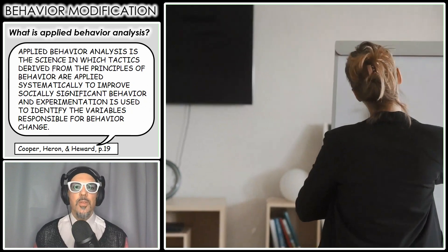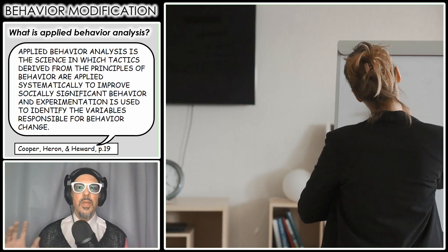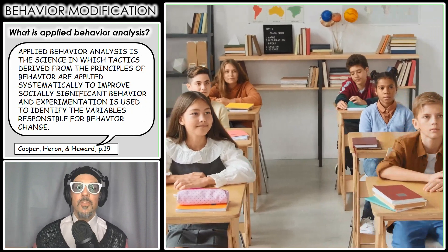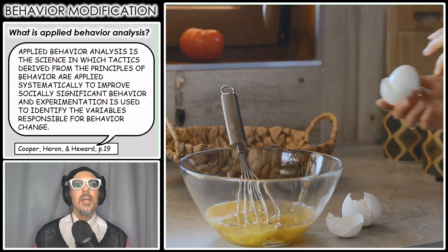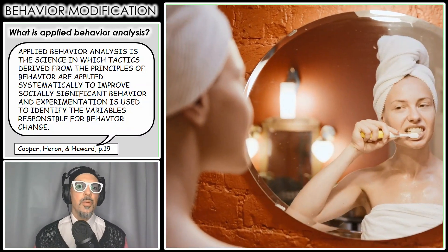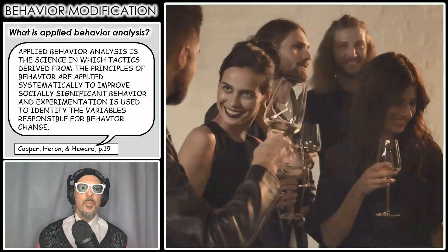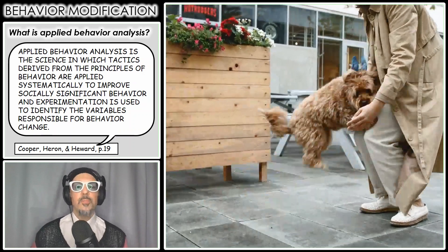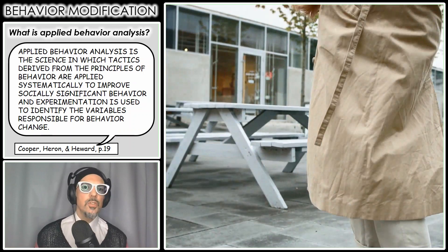So what behaviors are we talking about? We're talking about things like speaking and language — being able to speak in any culture is a very socially important behavior. Being able to communicate, being able to attend school, the behaviors you need to be successful in an academic setting — these are socially significant behaviors. Being able to care for yourself, prepare your own food, maintain a hygienic environment, personal hygiene — these are socially important behaviors. And then there are also leisure activities, which are socially significant behaviors, like being able to interact with others and even just play.